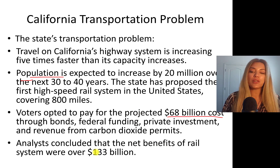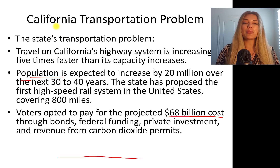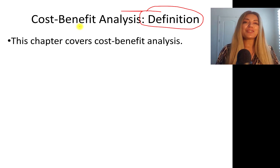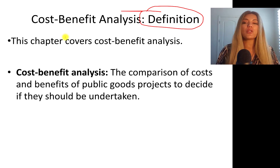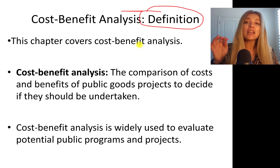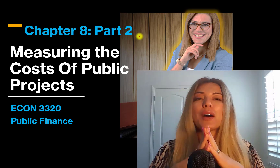Analysts concluded the net benefits of the rail system were over $133 billion. Cost benefit analysis is used in these cases to approve projects such as this — evaluating costs and benefits of public projects to decide whether we should approve them or not. In Corpus Christi, all projects that are undertaken go through cost benefit analysis.